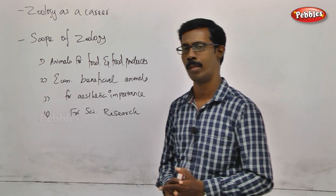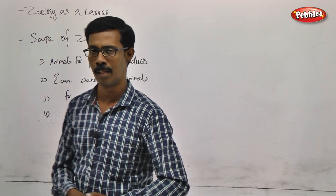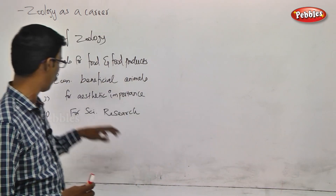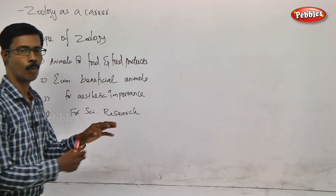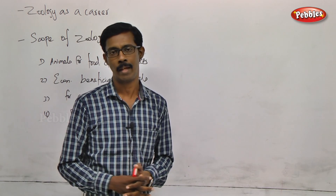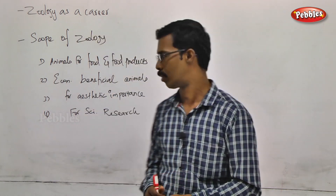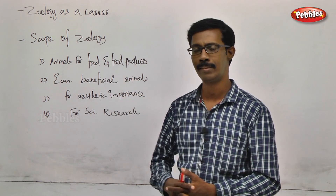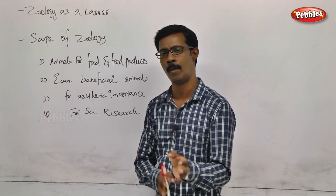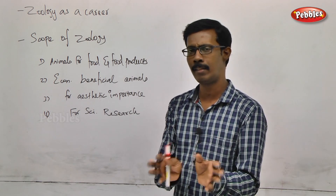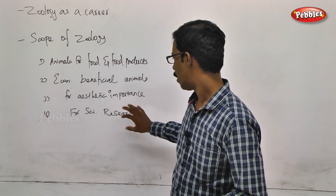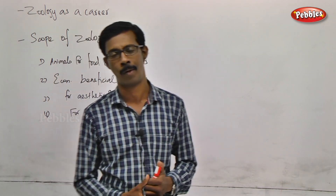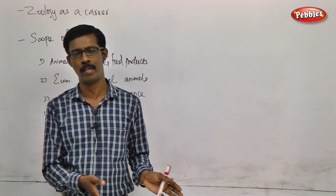That is the golden fish — that is why we use it for aesthetic value, not for food. That is why we use aesthetic nature. And there is also scientific research — that is a primary application.